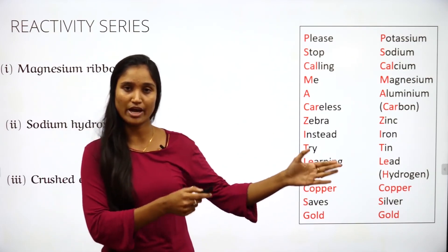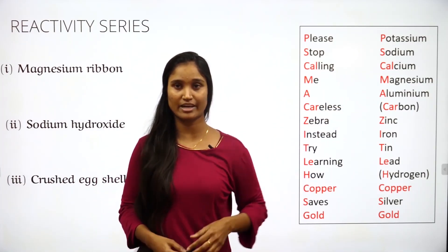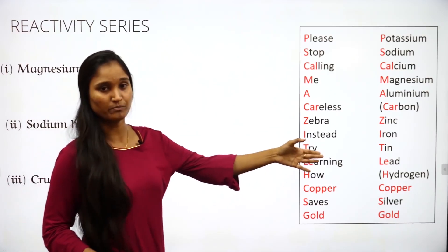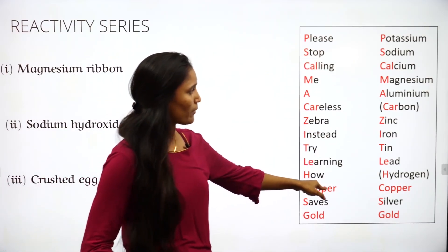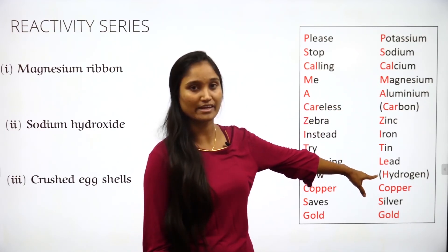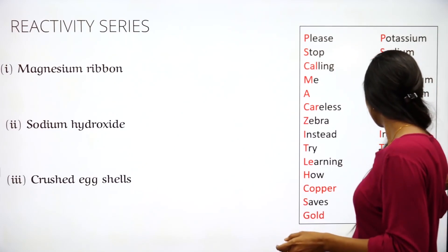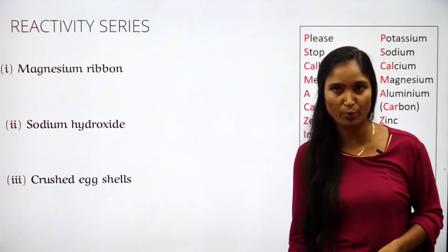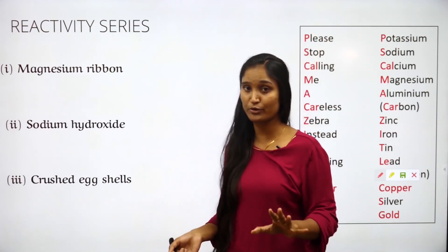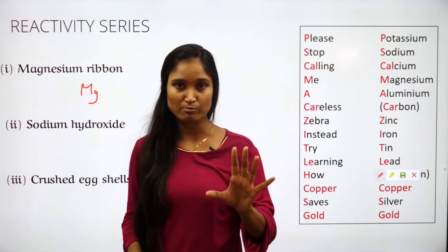To understand if dilute hydrochloric acid reacts with a given metal, the metal has to be more reactive than hydrogen. Magnesium is present above hydrogen in the reactivity series — it's one of the more reactive metals, present above carbon — so displacement is possible. Make sure you have a book with you and practice writing equations along with me.